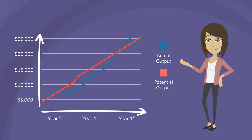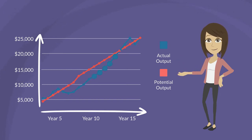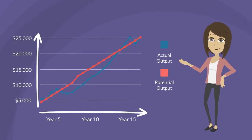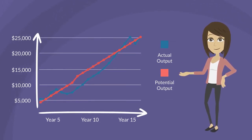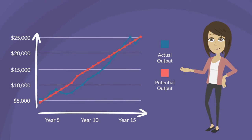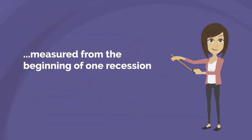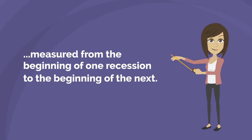The short-run fluctuations of actual output around potential output determine the business cycle, a term used to describe the fluctuating levels of economic activity in an economy over a period of time, measured from the beginning of one recession to the beginning of the next.